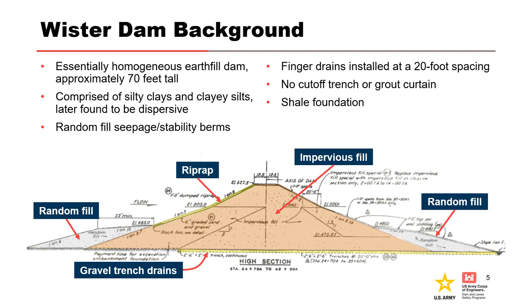The random fill berms were comprised primarily of shale and sandstone from the required excavations. Finger drains were constructed over the downstream two-thirds of the embankment to allow for consolidation of the embankment and overburden foundation soils during and after construction. The embankment was built on a shale foundation with no cutoff trench and without a grout curtain.